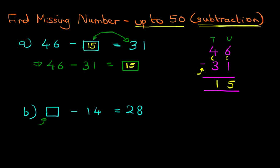Now again, the objective is that we get the missing number on one side of the equal sign. So what we're going to do is take the 14 and move it to the right-hand side. And because we're going to move it to the right-hand side, the minus is going to become a plus. So this question will then read: the missing number equals 28 plus 14.